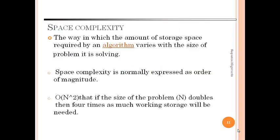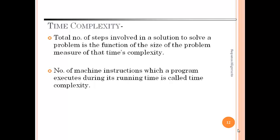For this we will calculate various space complexity and time complexity of algorithms. Space complexity is the way in which the amount of storage space required by an algorithm varies with the size of the problem it is solving. It is normally expressed as order of magnitude. For example, order of n squared: if the size of the problem n doubles, then 4 times as much working storage will be needed. Time complexity is the number of steps involved in a solution to solve a problem as a function of the size of the problem. It is the number of machine instructions which a program executes during its running time.